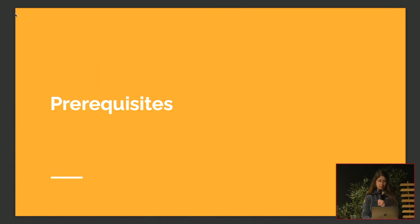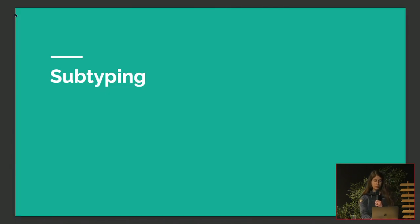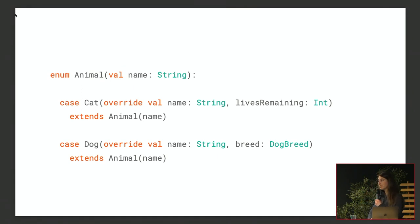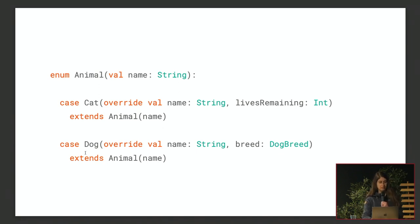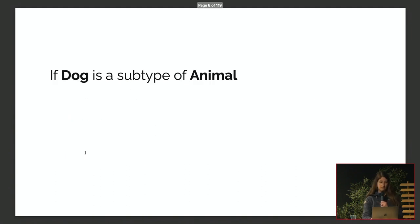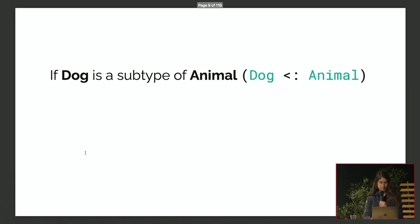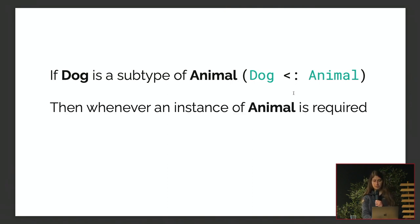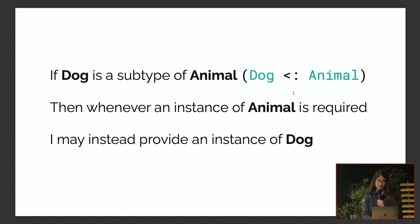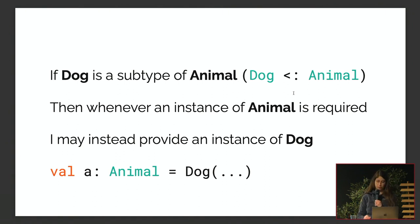The prerequisites are pretty basic. First, you need to understand subtyping. In Scala 3, I've chosen to use an enum, but we have a parent type Animal with two concrete subtypes: Cat and Dog. The key idea is substitution — if Dog is a subtype of Animal, then whenever your code needs an instance of Animal, you could instead pass an instance of Dog.